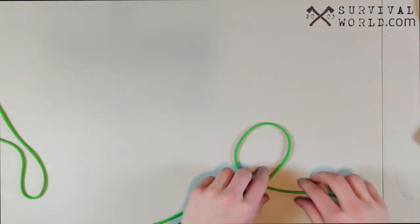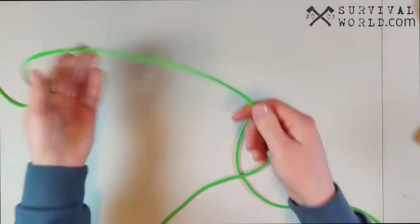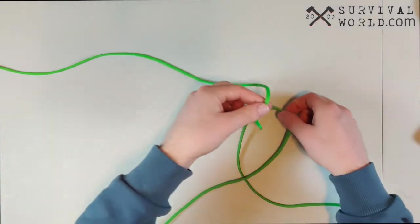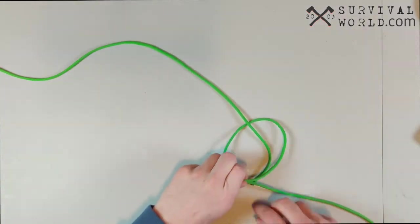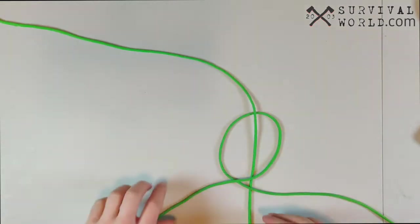To start off our carrick bend, we're just going to create a nice overhand loop. Keep it pretty near the end of the rope so you don't have a ton to waste. Now with your second rope that you're trying to join, we're going to stick it through that loop we just made and it should just split everything in half.